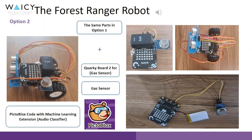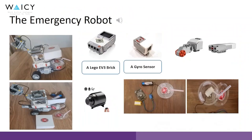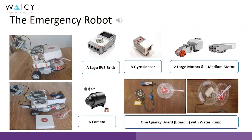For option two, we use Pixoblux with the machine learning extension audio classifier. We use the same parts as in option one, and we add a QR keyboard and a gas sensor, as you can see in the picture.